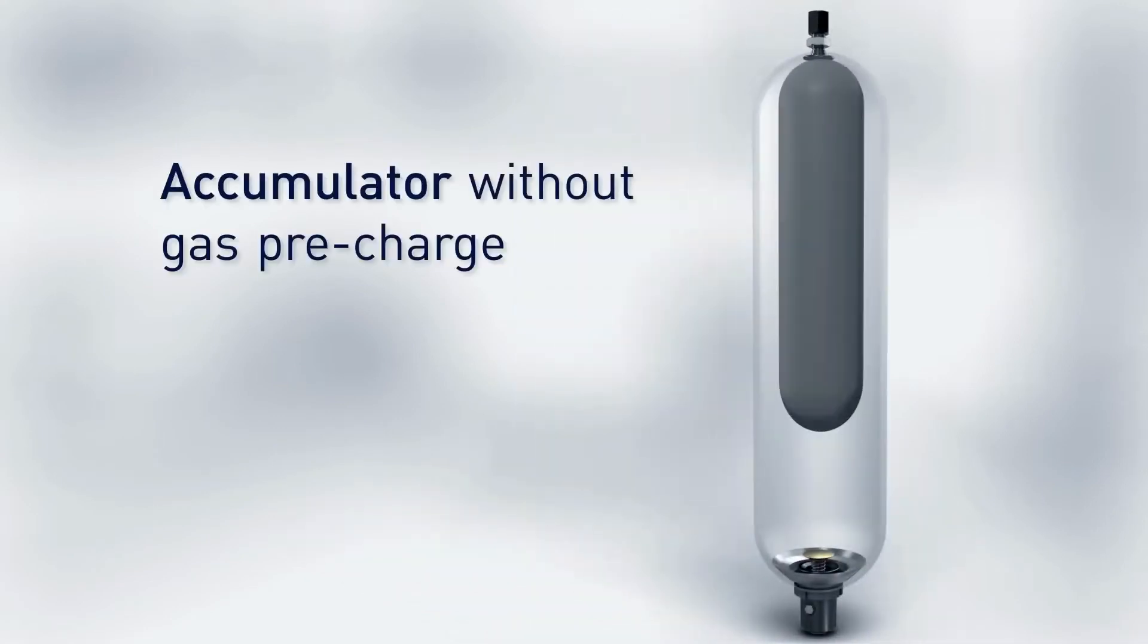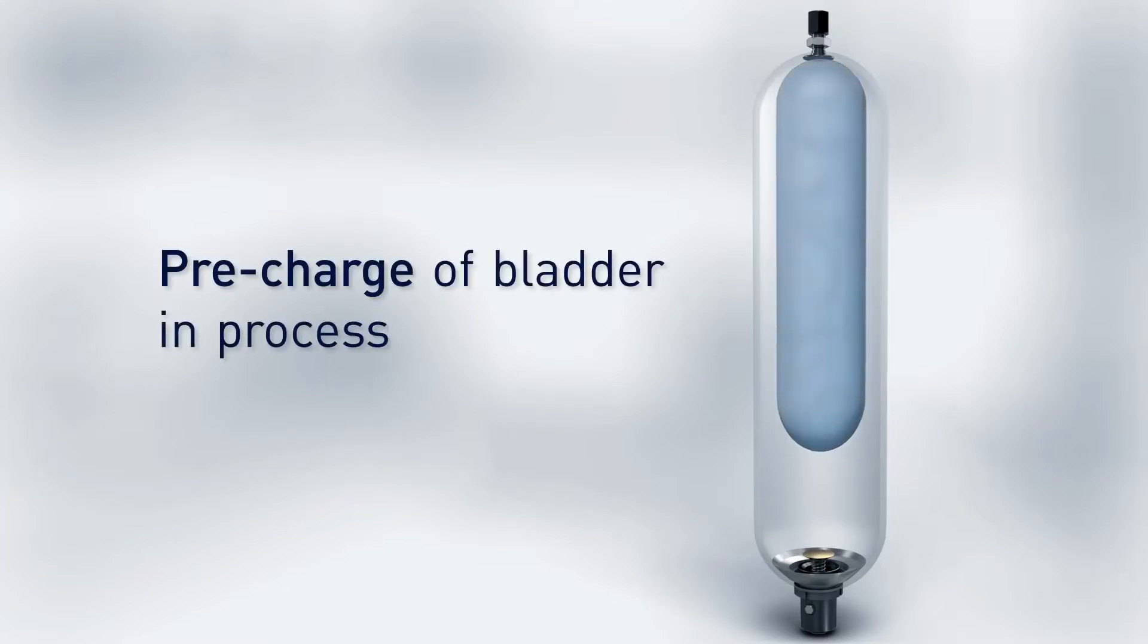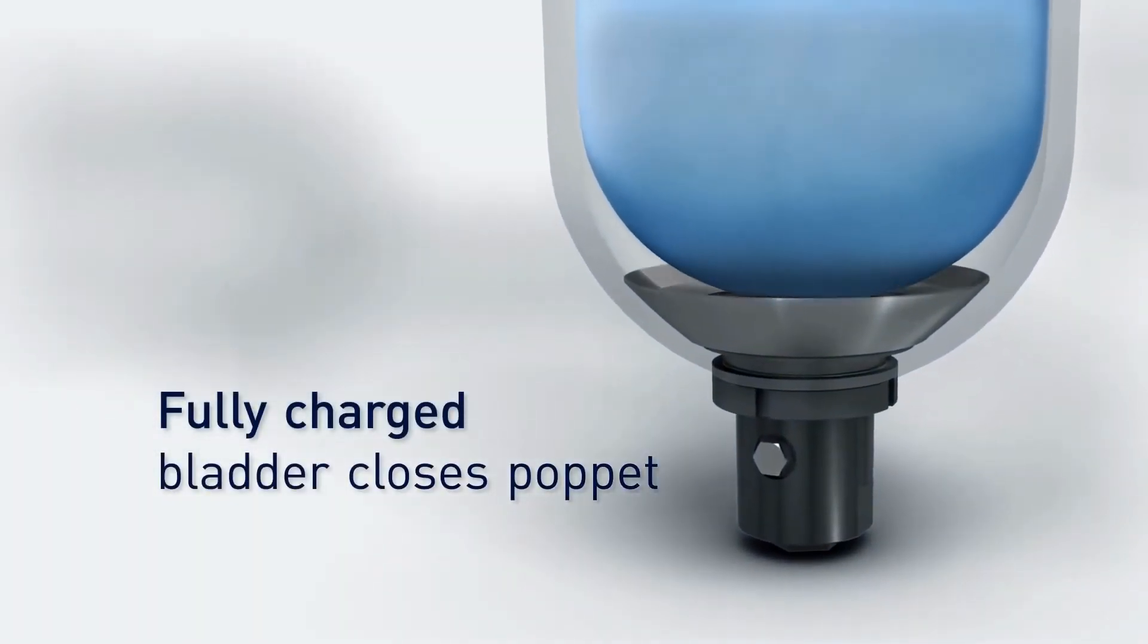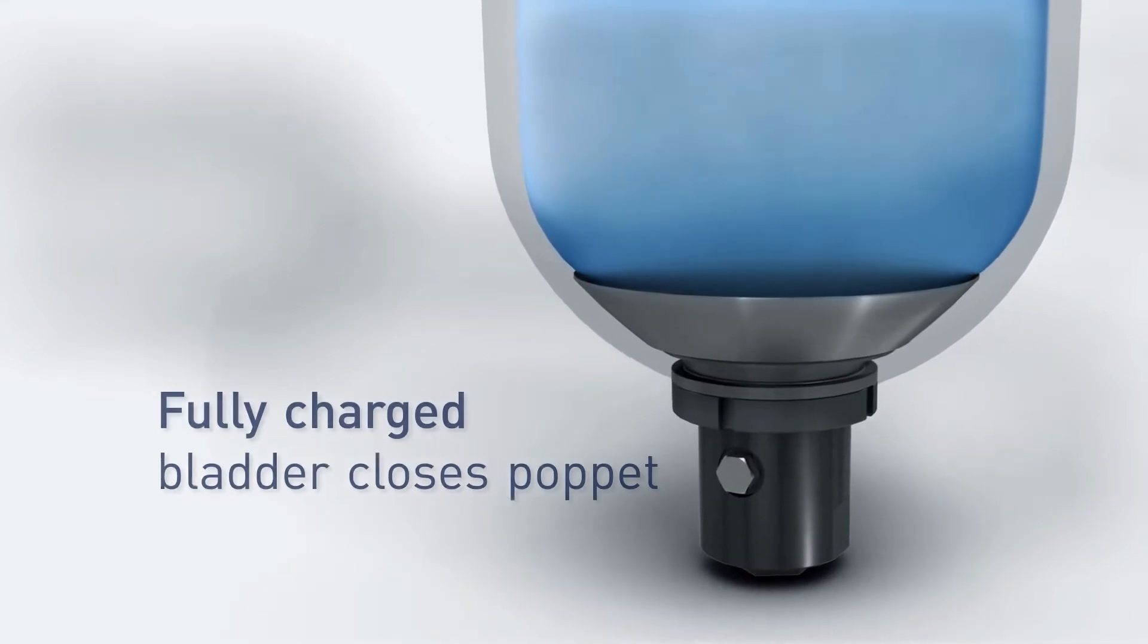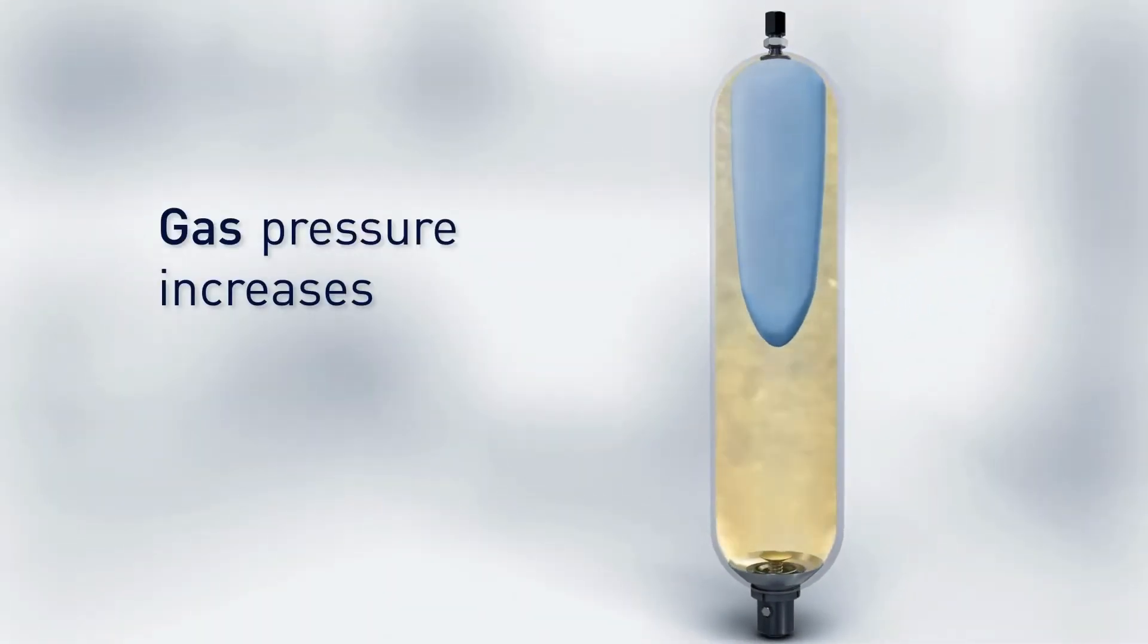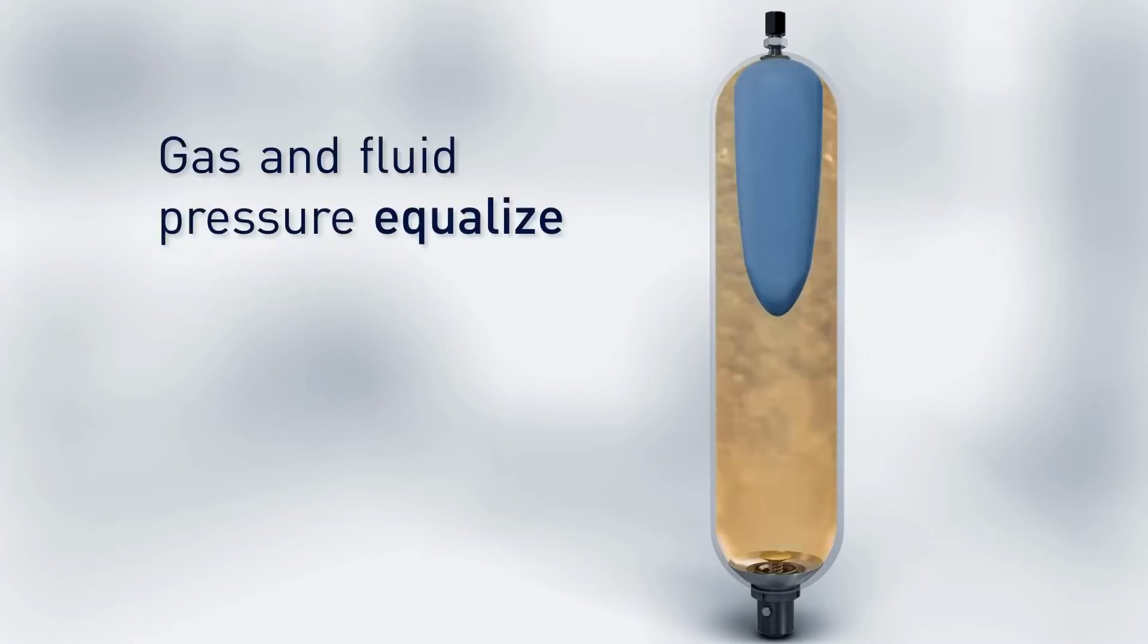A compressed gas accumulator consists of a cylinder with two chambers separated by an elastic diaphragm or totally enclosed bladder. One chamber contains the fluid and is connected to the hydraulic line. The other chamber contains an inert gas, typically nitrogen under pressure, that provides the compressive force on the hydraulic fluid.